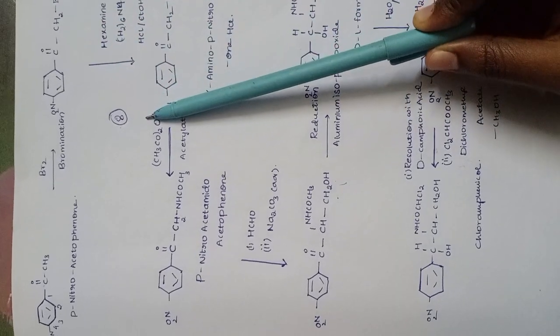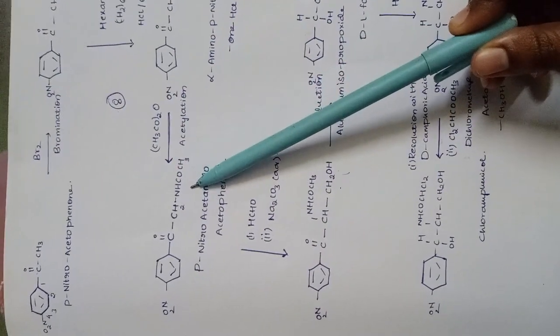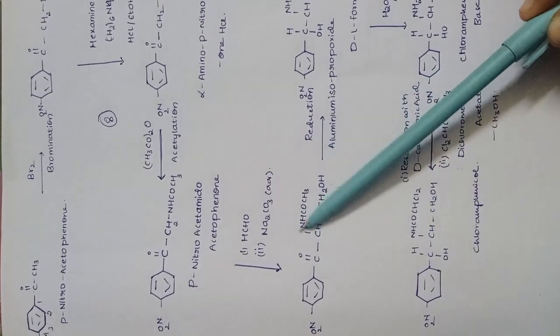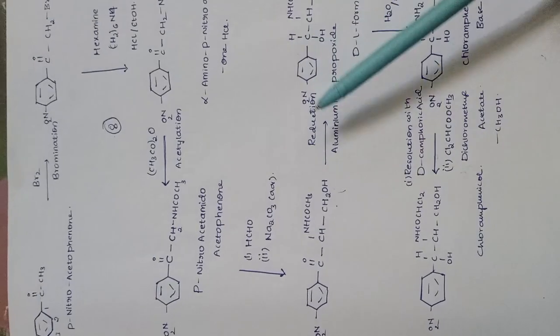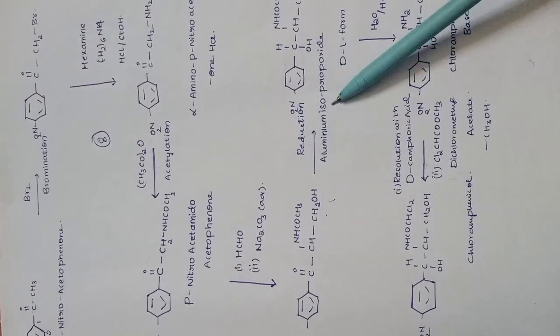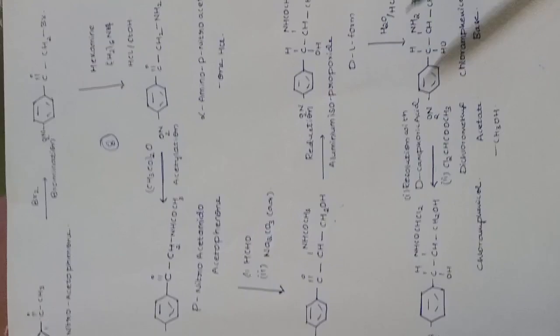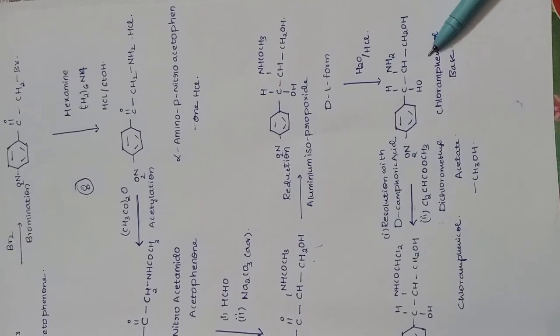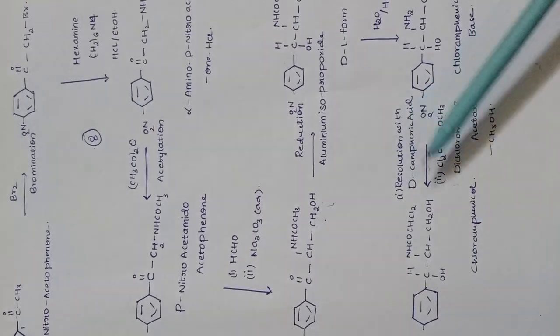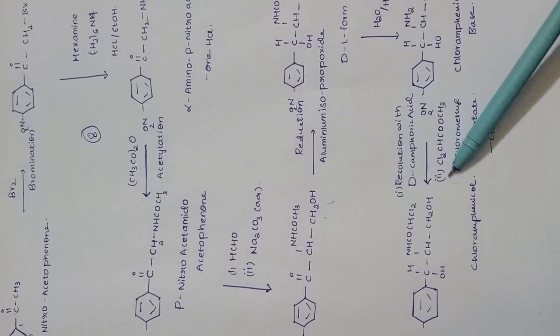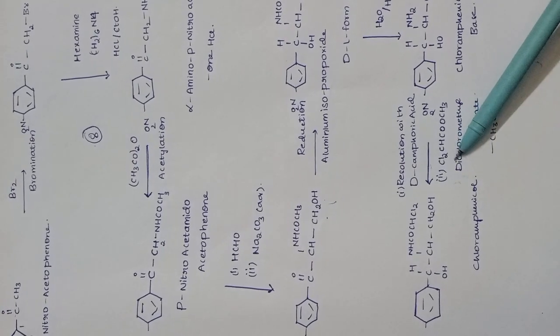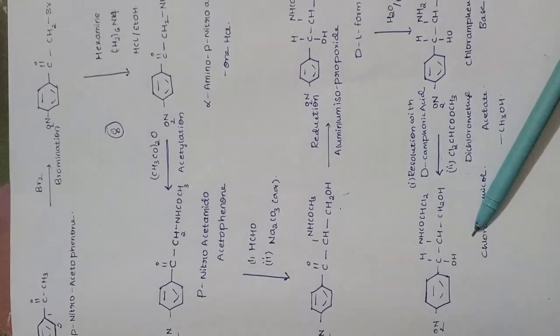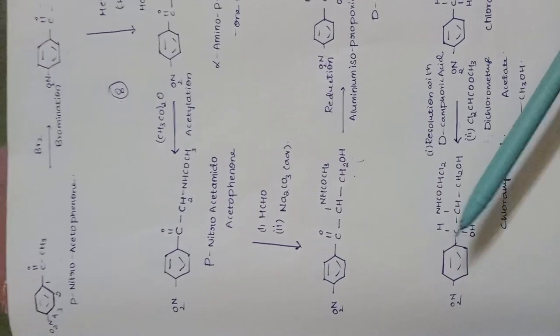Hexamine is added, followed by acetylation in the presence of formaldehyde and aqueous sodium carbonate. Then reduction with aluminum isopropoxide, followed by HCl treatment. Resolution with decamphoic acid gives the dichloromethyl ester, which is chloramphenicol. This is the basic structure of chloramphenicol.